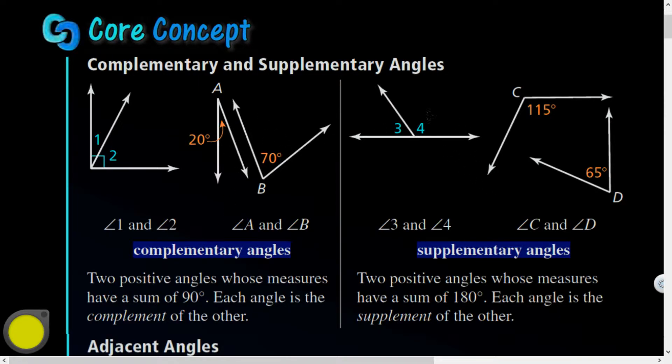And then supplementary angles—this is actually a special type when they're connected like this, if they share a vertex and have a shared side. But supplementary angles add to 180 degrees, but they also can be disconnected like that.